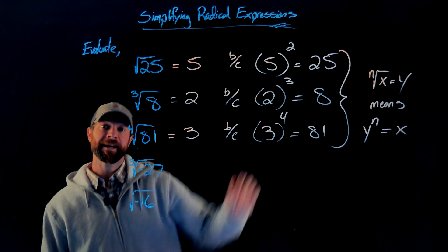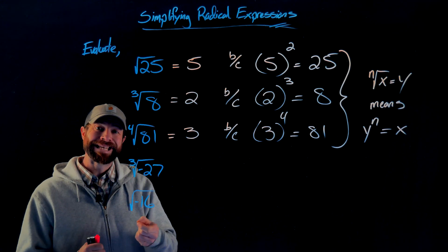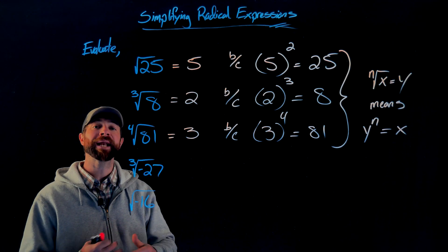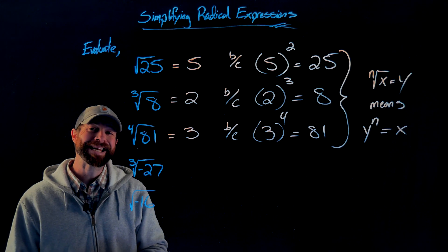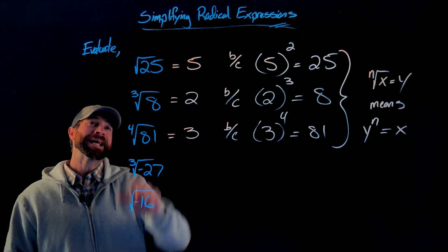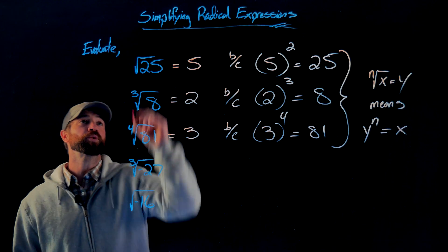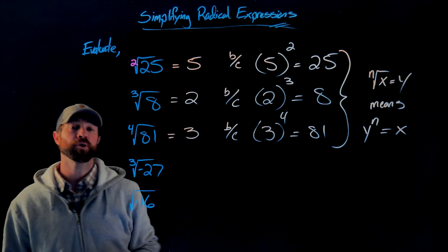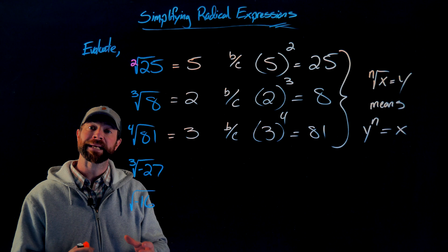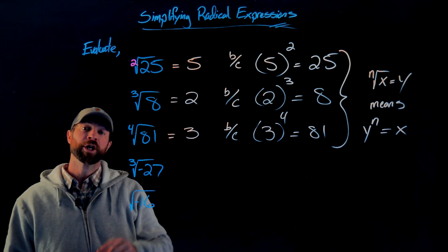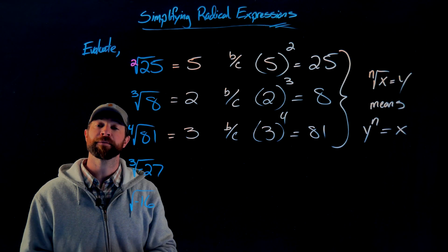All radicals have an index. The index tells you what exponent you're working with. The square root does have an index even though we don't write it — it's an index of 2. As we move to more complicated algebraic expressions, it'll be useful to write the index of 2 to help yourself through the problem.